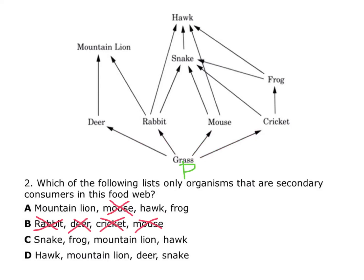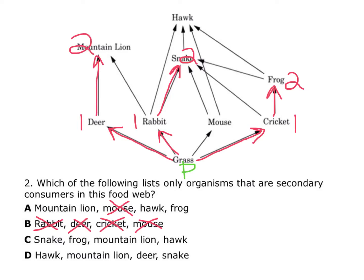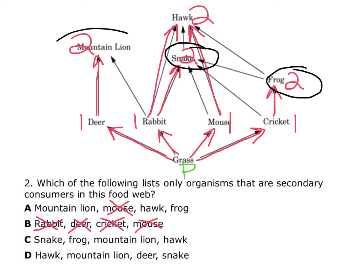Answer choice C: I start with P on my producer and go up to the snake. Through the rabbit — rabbit is primary, snake is secondary. Now looking at the frog — crickets are primary, which makes frogs secondary. Looking at the mountain lion — deer are primary, that would make mountain lions secondary. And then the hawks — mouse are primary, and hawks are secondary. So the snakes, frogs, mountain lions, and hawks are all secondary consumers, which is what I was looking for. So C looks like the right answer.